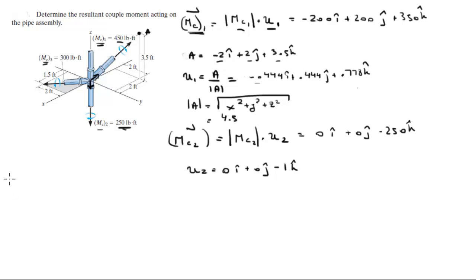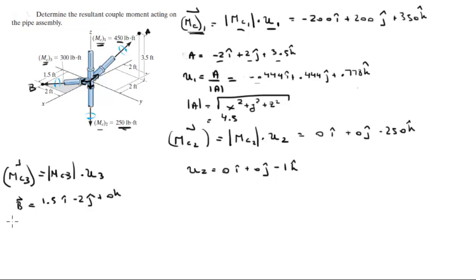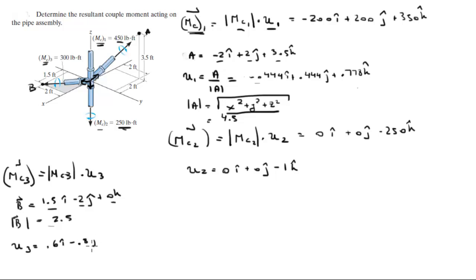The last one is MC3. MC3 is given by the magnitude of MC3 times unit vector 3, which aims in this direction. Let's call this point B. B sits at 1.5 in the i, minus 2 in the j, plus 0 in the k. The magnitude of B is found with the formula — square root of x² + y² + z² — which gives 2.5. Dividing B by its magnitude gives unit vector 3: 0.6 i minus 0.8 j plus 0 k.